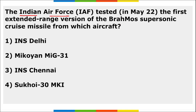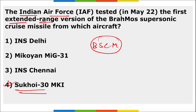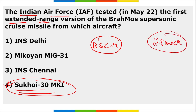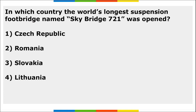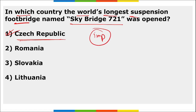The Indian Air Force tested the first extended-range version of the BrahMos supersonic cruise missile from the Sukhoi Su-30 MKI fighter jet. The missile achieved a speed of Mach 2.8, with an extended range of approximately 350 km, up from the earlier 290 km. The world's longest suspension footbridge is Skybridge 721 in Czech Republic; the world's longest glass-bottom bridge is in Vietnam — the Bach Long or White Dragon bridge.